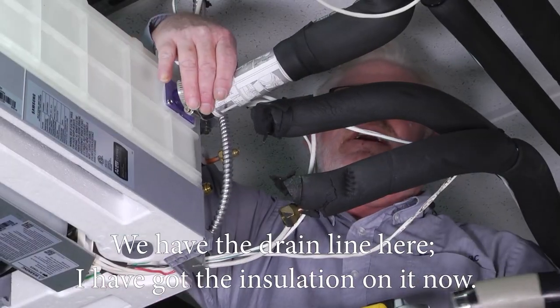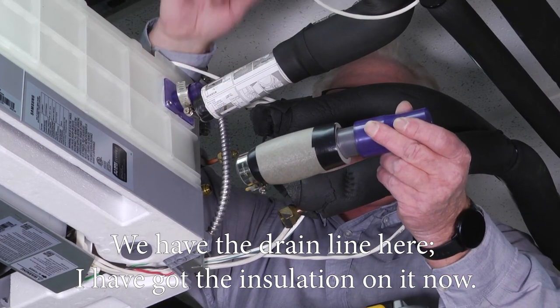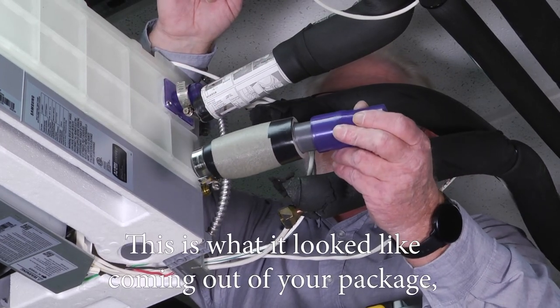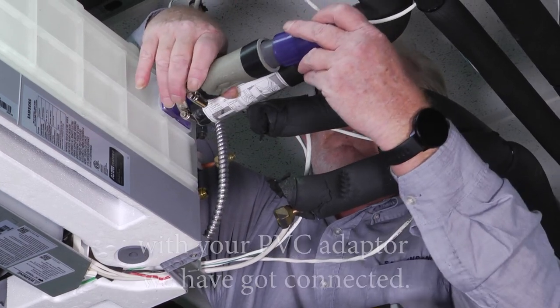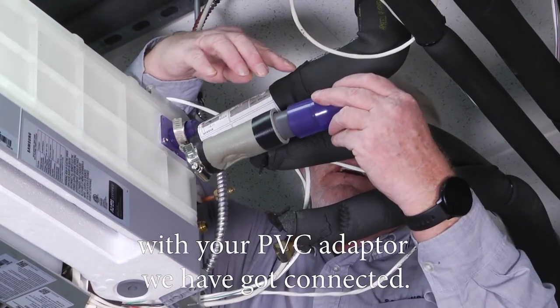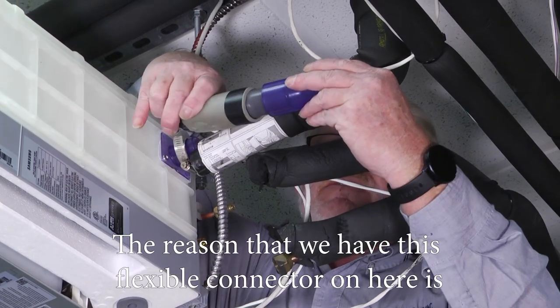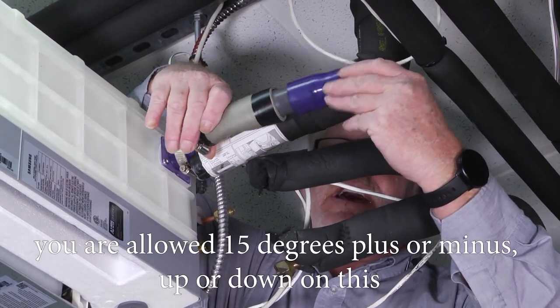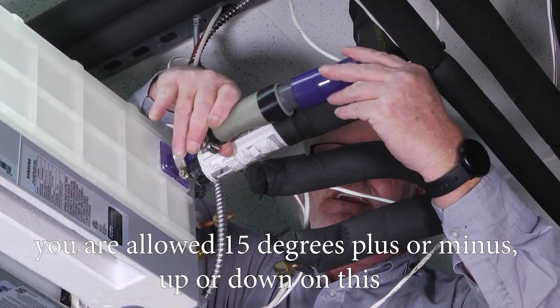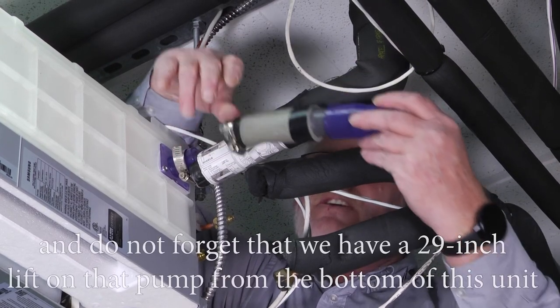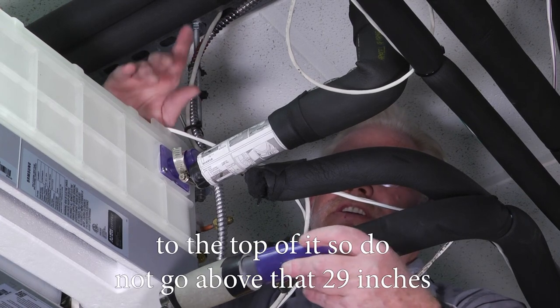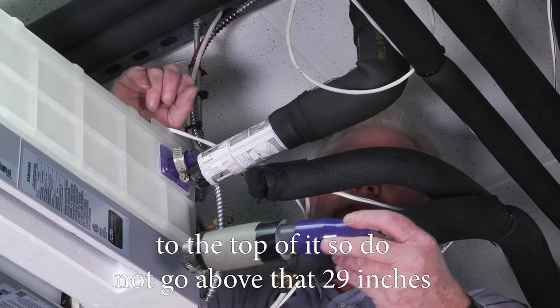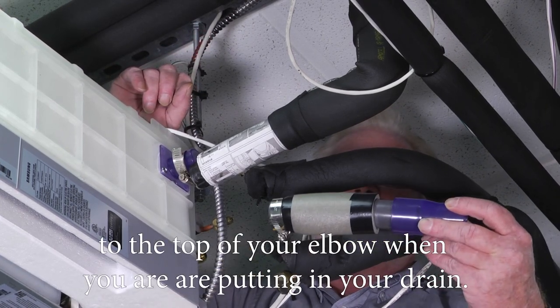We have the drain line here. I got the insulation on now. As you'll see, you've got a flexible connector here with your PVC adapter connected. The reason why we have this flexible connector on here is you're allowed 15 degrees plus or minus up or down on this. Don't forget we have a 29 inch lift on that pump from the bottom of this unit to the top of it. So do not go above that 29 inches to the top of your elbow when you're putting your drain.